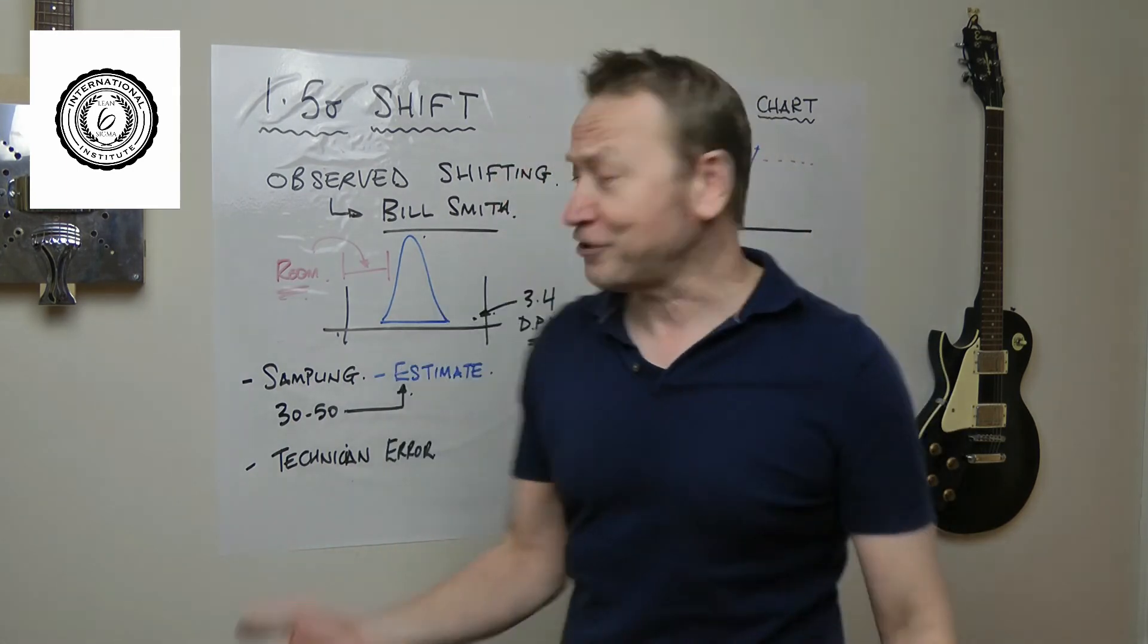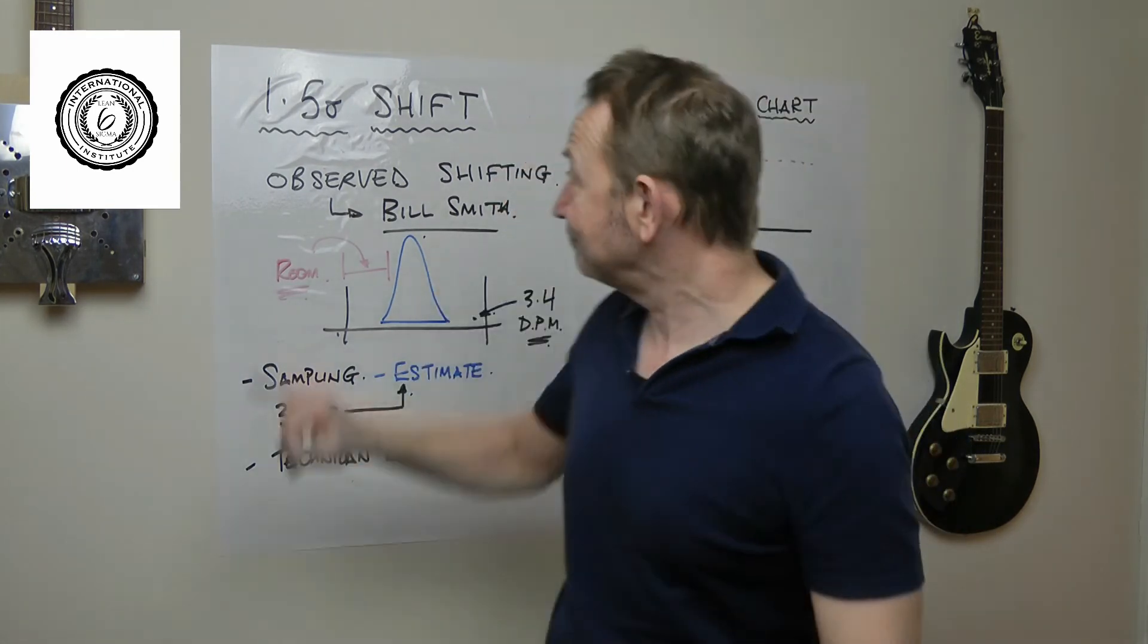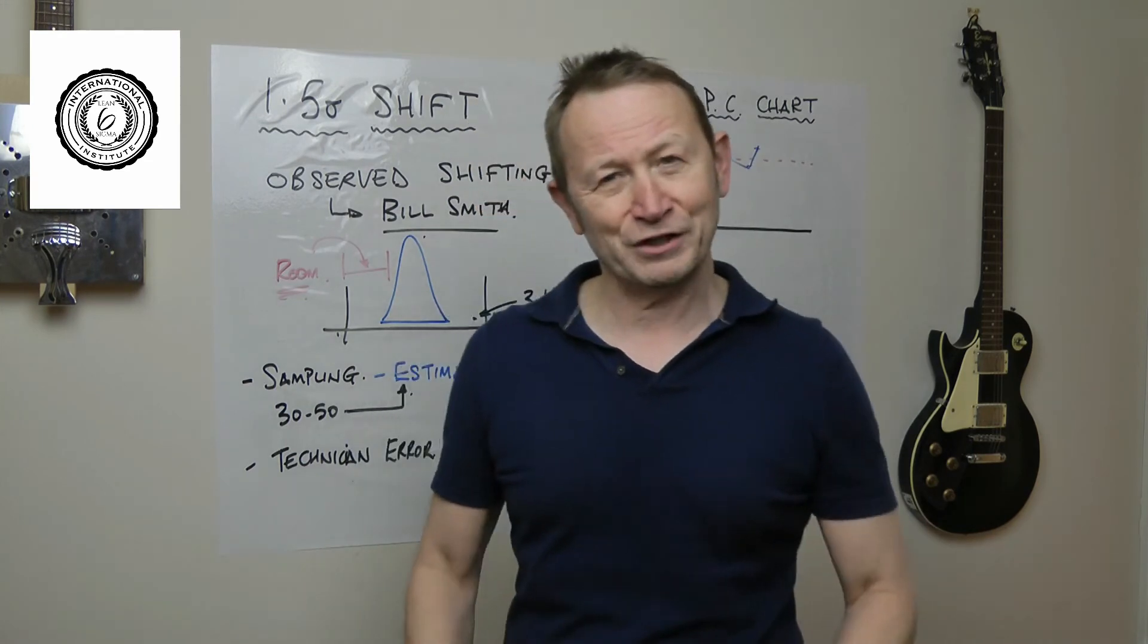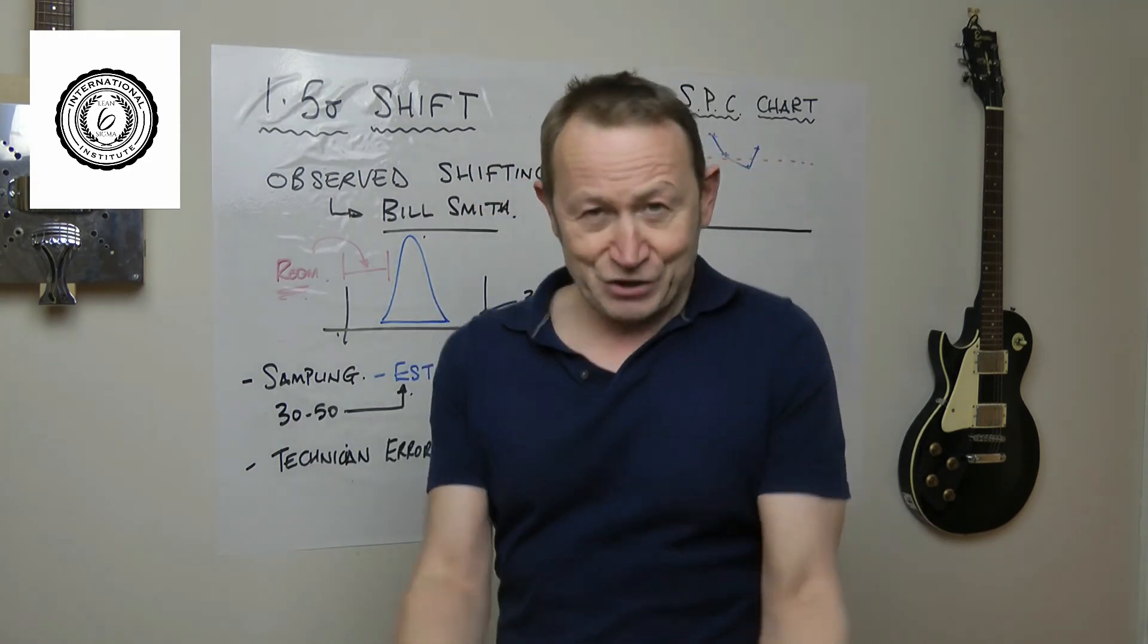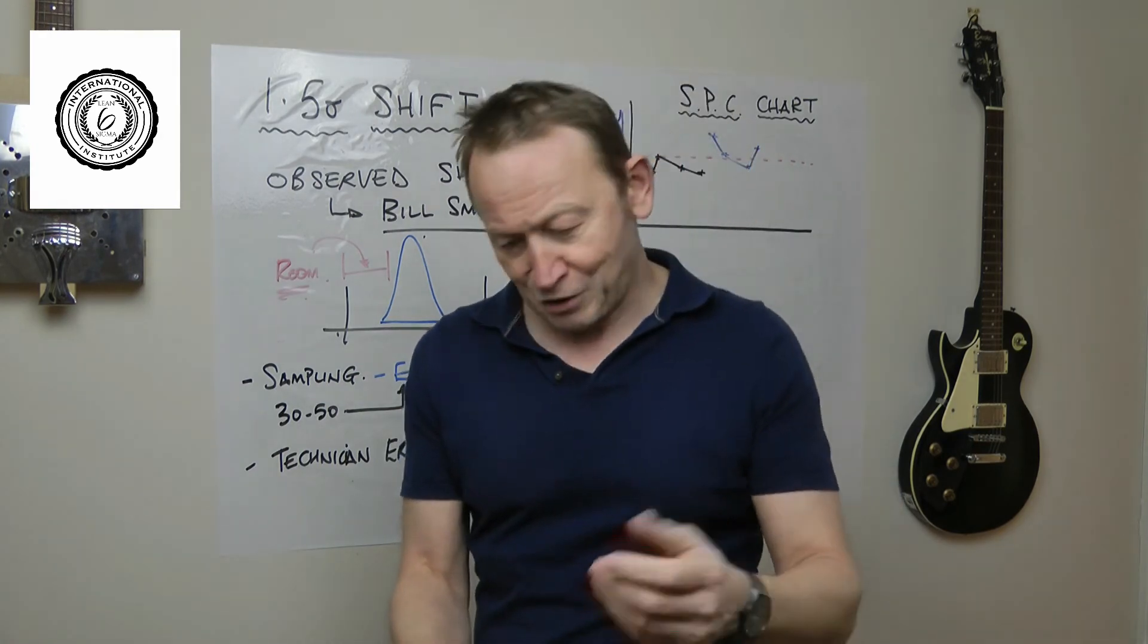Now let's assume that he's really good at this and he gets the thing centered. Now we don't have a 1.5 sigma shift. But now maybe there's things that do shift the process.